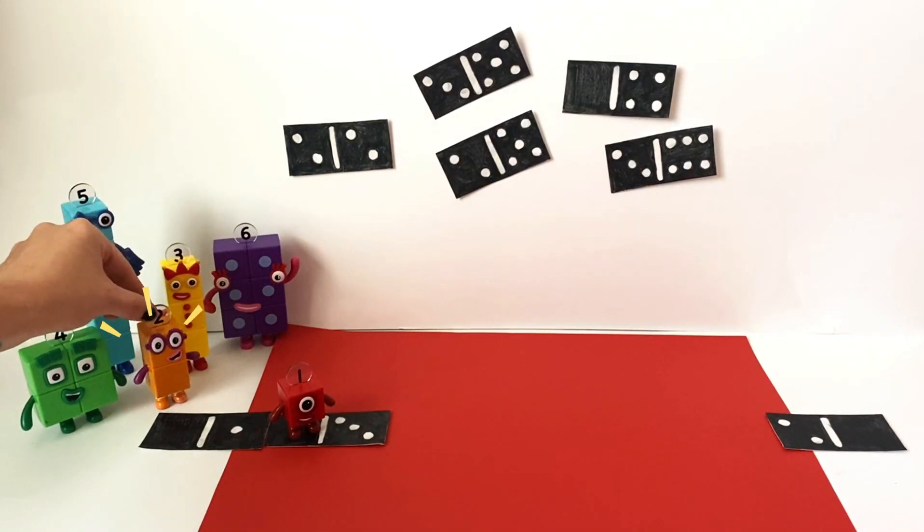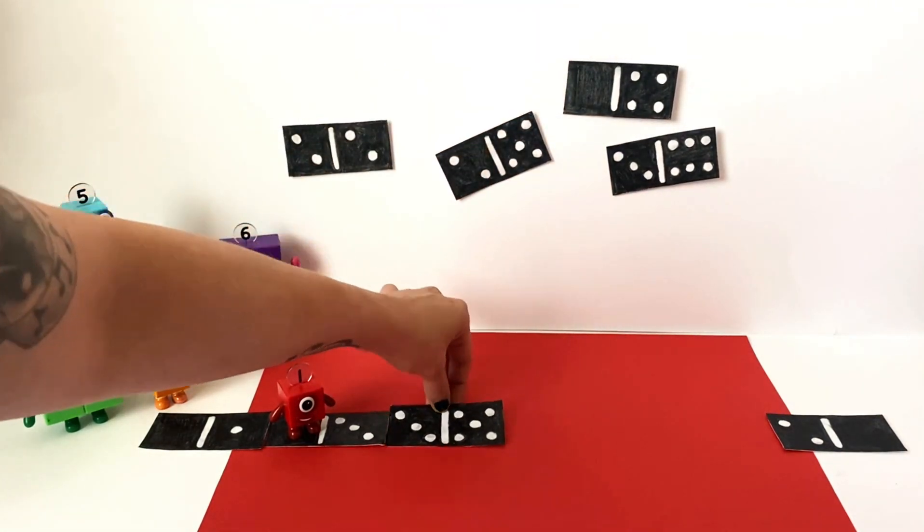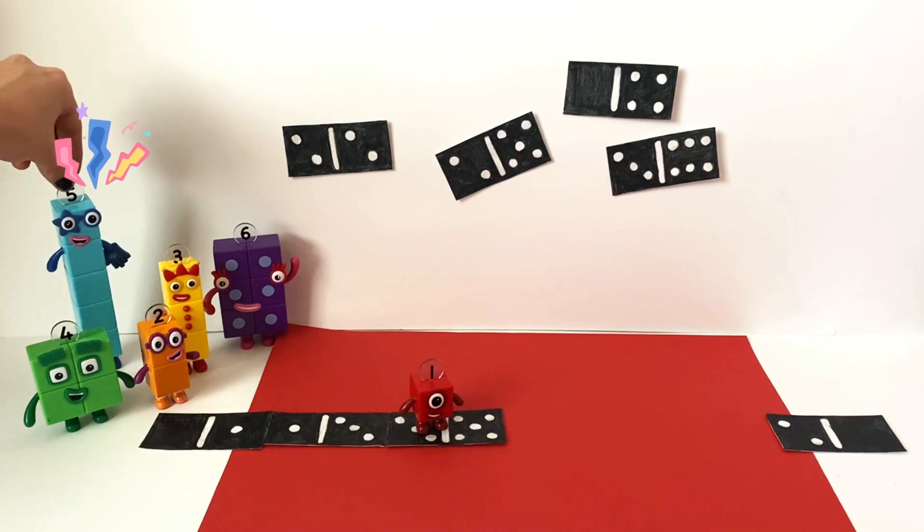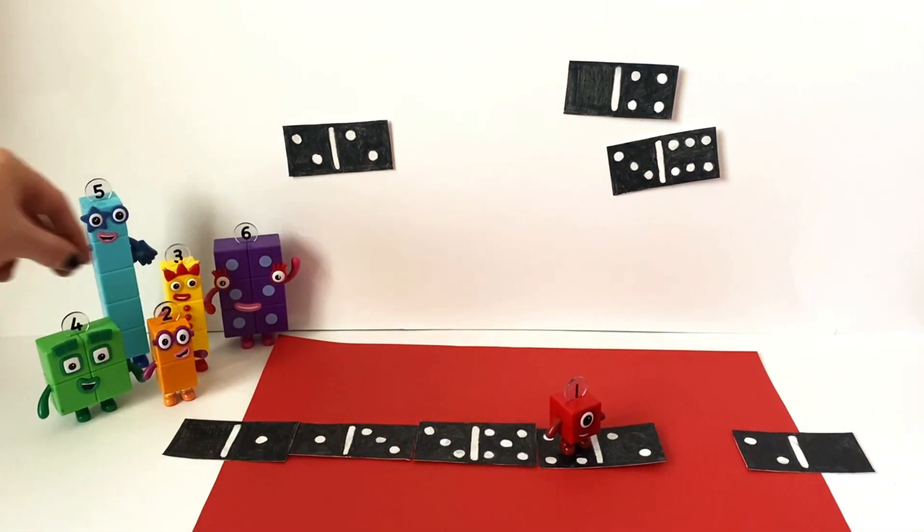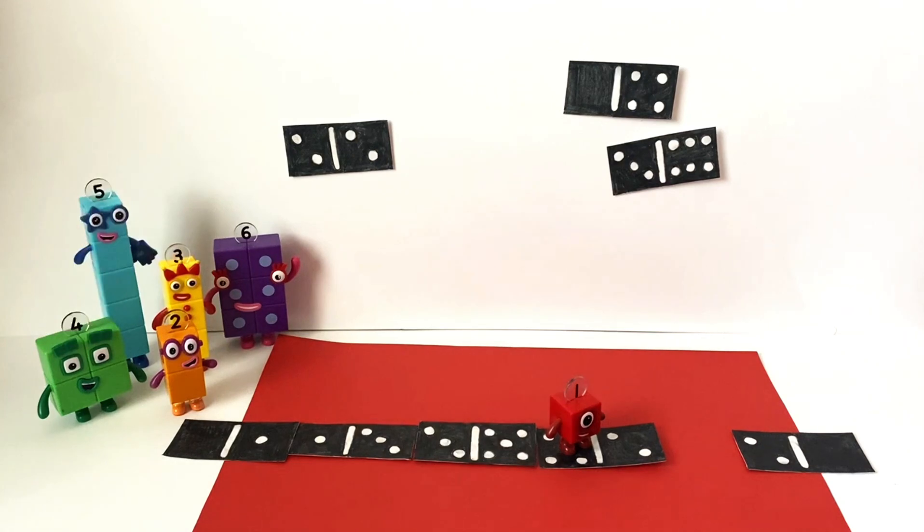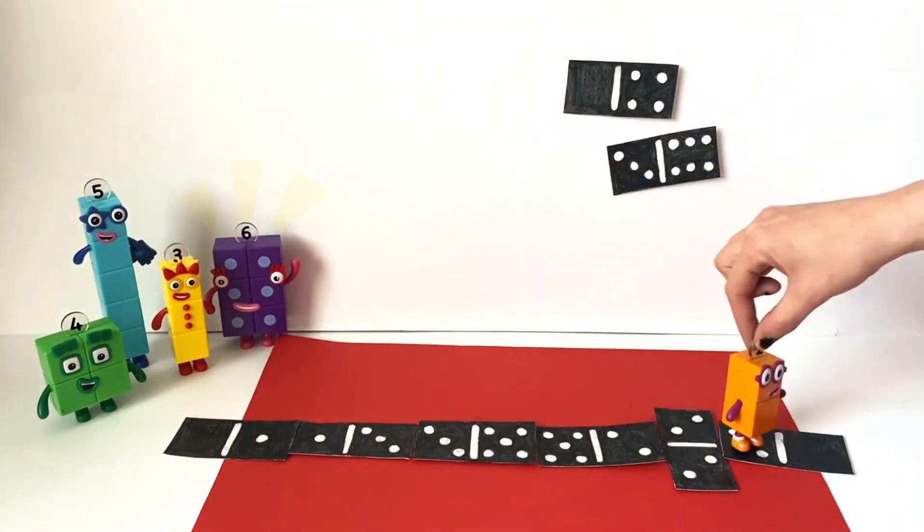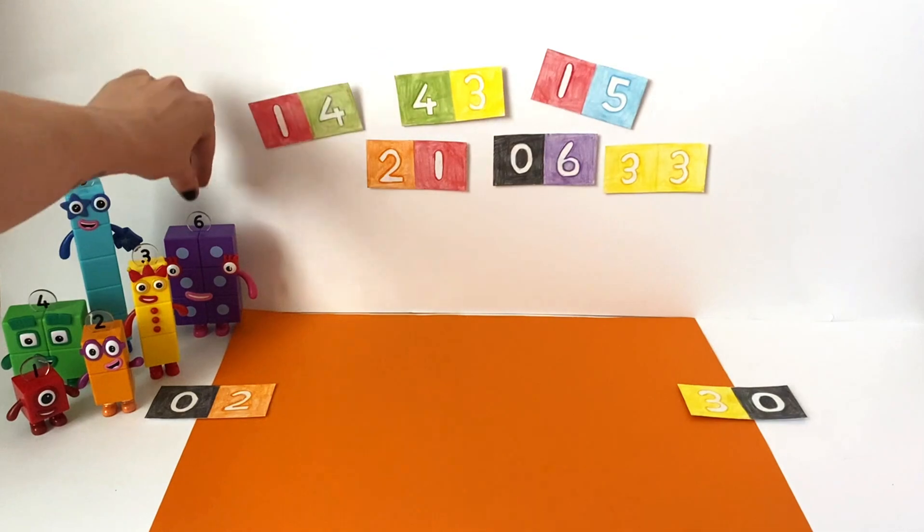Great! But which domino goes next? Hmm, there's a three on the end of that path. Look! So we need another three to match it. Three! My turn! Five spots on that one! Thanks, five! Two spots on the domino! Two on the ledge! We need a double! Brilliant! Woohoo! Yeah! Woohoo!